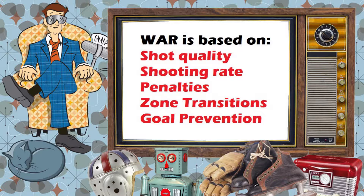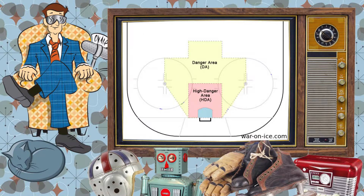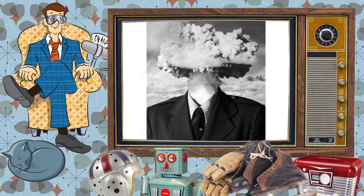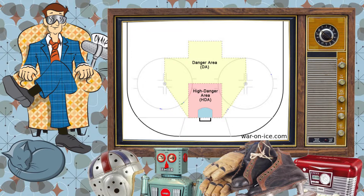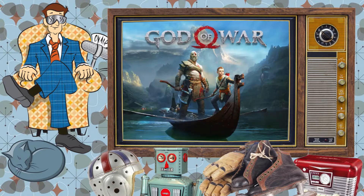Shot quality can be broken down further into high, low, and medium danger shots based on this chart. The more a player takes high danger shots, the better chance he has to score on those shots, which results in more goals and more wins. This also applies on the defensive end — a player who takes an exceptional amount of high danger shots but also gives up the same amount will not be blessed by the gods of WAR.